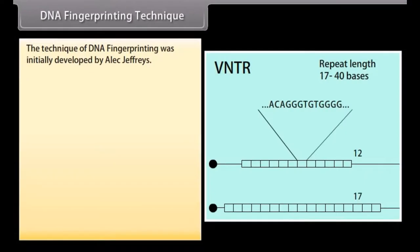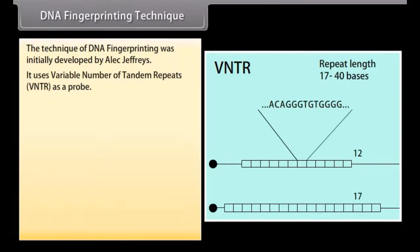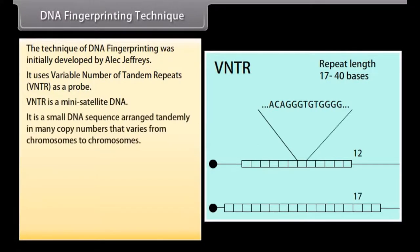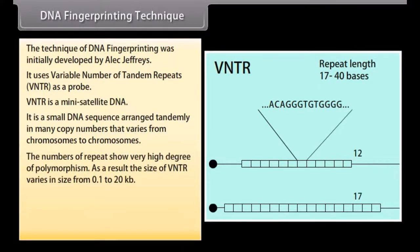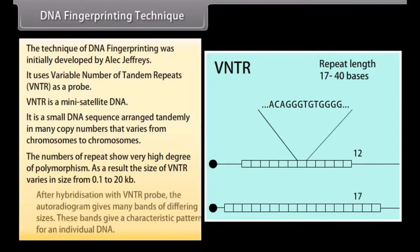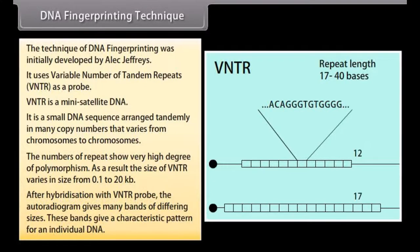The technique of DNA fingerprinting was initially developed by Alec Jeffreys. It uses variable number of tandem repeats (VNTR) as a probe. VNTR is a mini satellite DNA — a small DNA sequence arranged tandemly in many copy numbers that varies from chromosome to chromosome. The number of repeats shows a very high degree of polymorphism, and as a result the size of VNTR varies from 0.1 to 20 KB. After hybridization with the VNTR probe, the autoradiogram gives many bands of differing sizes, giving a characteristic pattern for an individual's DNA.